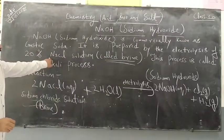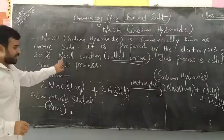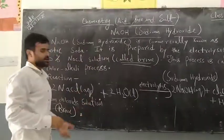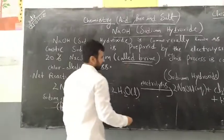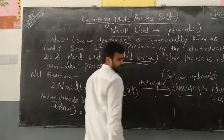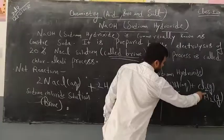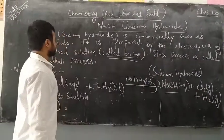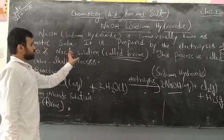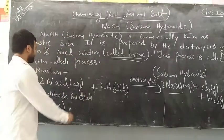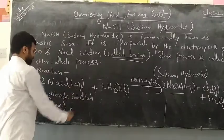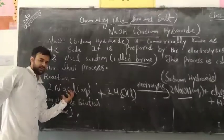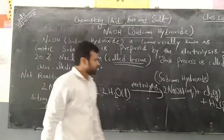When brine undergoes electrolysis in the presence of water, caustic soda (NaOH) is formed. Two byproducts are also formed: chlorine and hydrogen gas. So caustic soda is formed by the electrolysis of brine, and two byproducts.